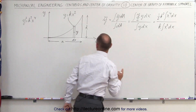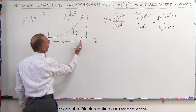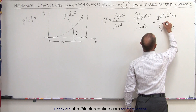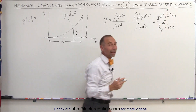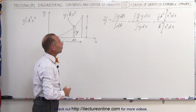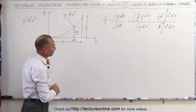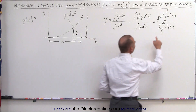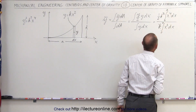Now we want to integrate this all the way from x equals 0 to x equals A — so from 0 to A in both the numerator and denominator. That should give us the center of mass, or the center of gravity, in the y direction of that parabolic spandrel. We can go ahead and cancel the k and k-squared terms.